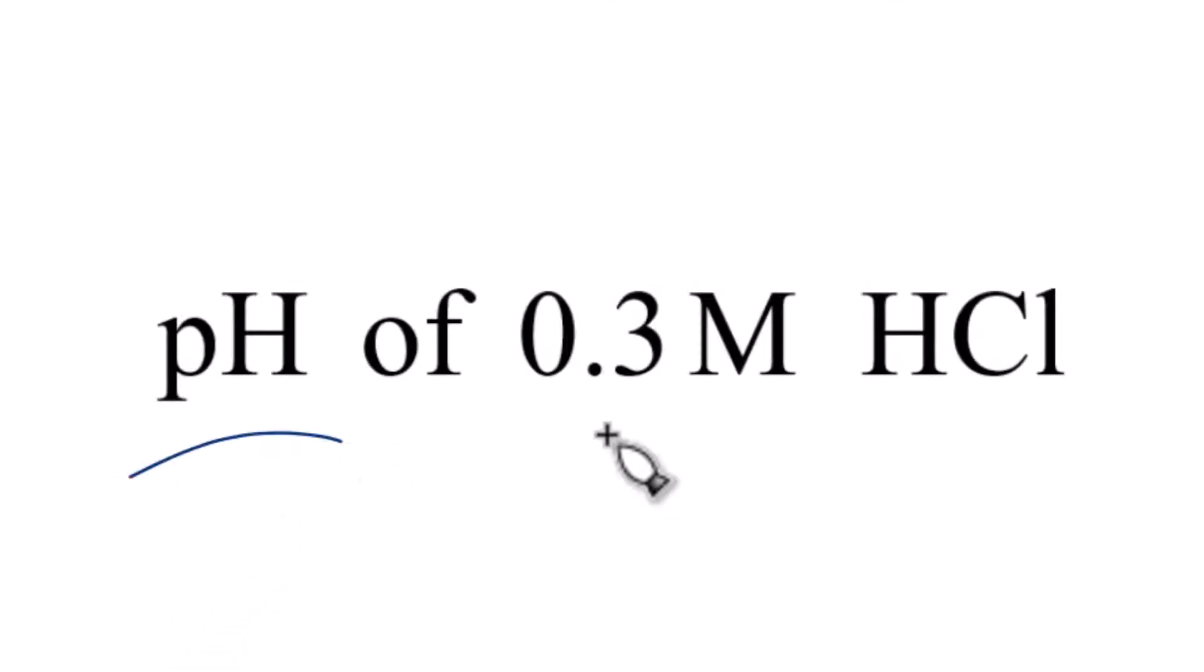Let's take a look at the pH of a 0.3 molar solution of HCl. That's hydrochloric acid. First off, hydrochloric acid is a strong acid. You just need to memorize that.